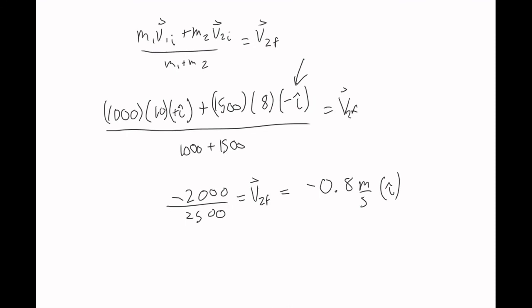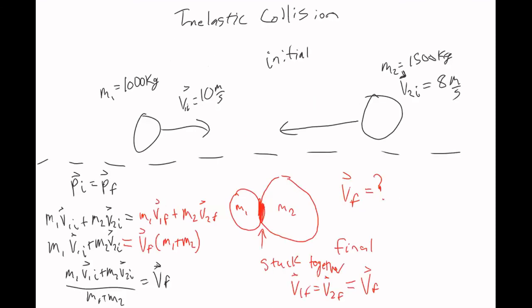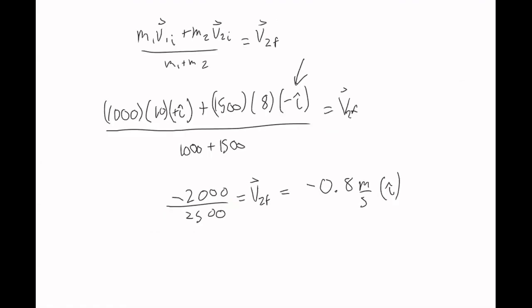Looking back at the setup — they were moving in opposite directions and hit each other. If instead mass two had been moving to the right, the physics and algebra would be the same up to the equation, but when you plug in the numbers you would add the two momenta instead of subtracting them, giving a completely different answer. Paying attention to what direction each velocity and therefore each momentum is pointing is very important.